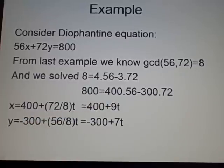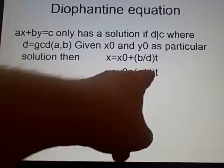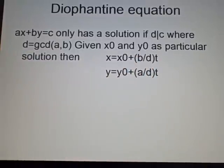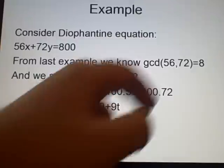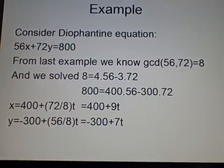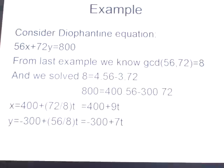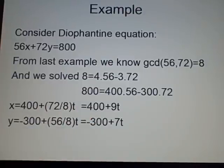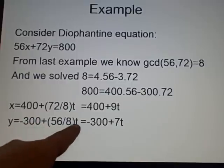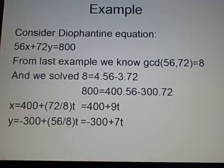Yep, 400 and minus 300. So, we have 400 plus, and as we said before, it's b divided by d. Now, b is this thing in front of the y, so we have 72 divided by d, which is 8. Remember our greatest common divisor. Oops, sorry. And so, that's 72 divided by 8, which cancels down to x is 400 plus 9t, and here is minus 300 plus 7t, and they are our final solutions.